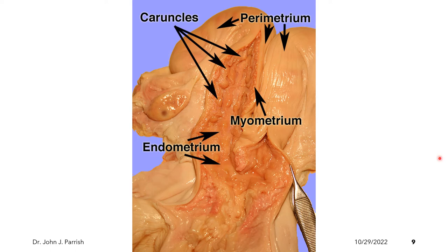The uterus itself is composed of three layers. We have the outer layer, or the serosa, which is called the perimetrium. We have the muscle or muscular layer, which is known as the myometrium. And we also have the inner mucosa plus the submucosa, which comprise the endometrium.